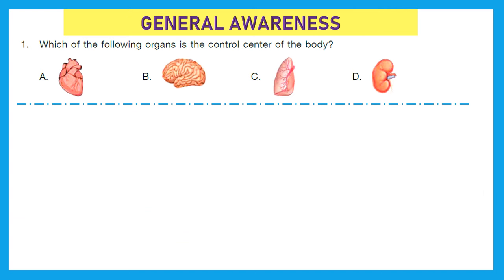First section is General Awareness. Question 1: Which of the following organs is the control center of the body? Which organ controls our whole body? It's our brain. Option B is the right answer.